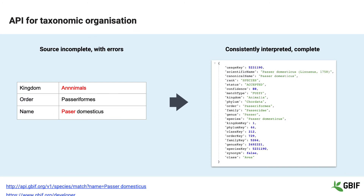One of our most commonly used APIs is the API for taxonomic organisation. At GBIF we build a backbone taxonomy of scientific names and this service allows anybody to look up how a scientific name would appear in the GBIF backbone. The data that flows through the GBIF systems all carries some kind of identification that can have spelling mistakes or be incomplete, and this service allows us to provide a consistent view on every record. The example shown here doesn't tell us what family the bird is in, but by using this service we're able to complete the blanks and know that this is a species within the Passeridae family. This is an open API and you can integrate it into your own processes today if you're dealing with scientific names.